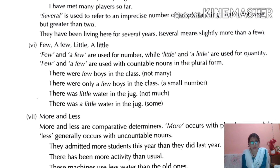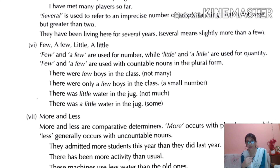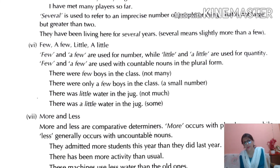'Few' and 'a few' are used for numbers — countable things. 'Little' and 'a little' are used for quantity — uncountable things. Example: 'There are few boys in the class' — not too many. 'There were only a few boys in the class' — a small number.